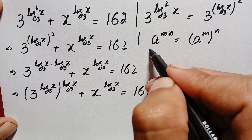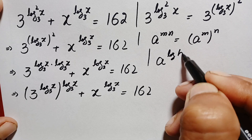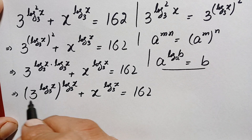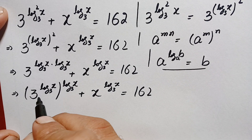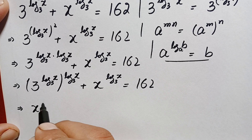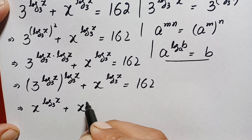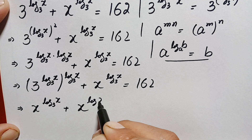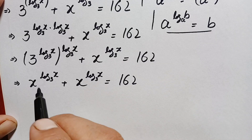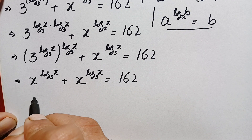Here inside the parenthesis we use the logarithm property: a raised to power log base a of b equals b. Using this identity, we replace 3 raised to power log₃x with x. So the left hand side becomes x raised to power log of x with base 3, plus x raised to power log of x with base 3, is equal to 162.